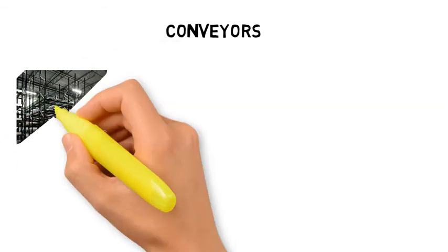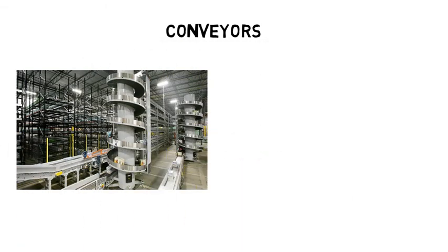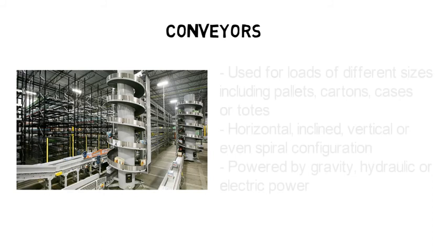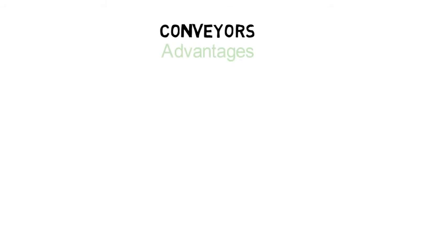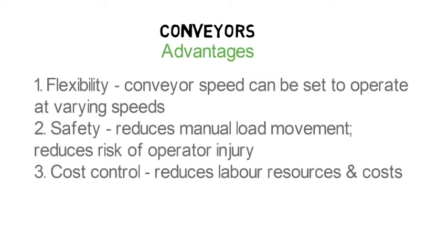Conveyors can be used for loads of different sizes including pallets, cartons, cases or totes. They can be laid out in horizontal, inclined, vertical or even spiral configurations, and powered by gravity, hydraulics or electricity. Conveyors can be set to operate at varying speeds to accommodate slow and peak period demands. The use of conveyors reduces the volume of manual load movement, lowering the risk of operator injury and collision. Overall, they automate handling of large volumes at reduced labour resources and costs.